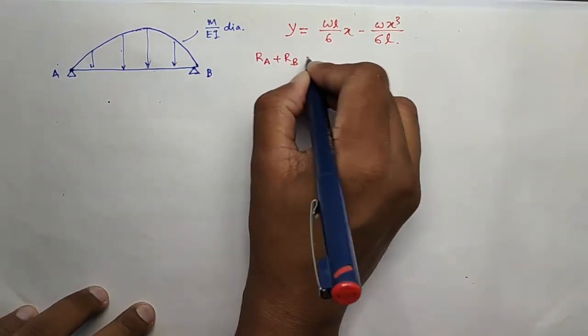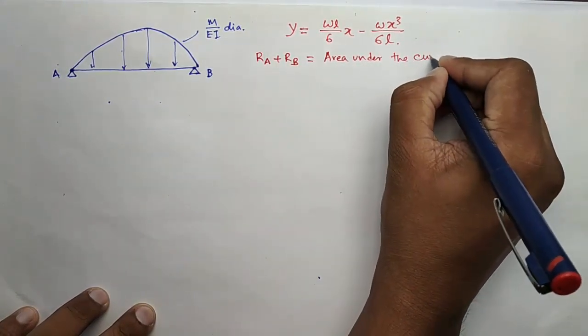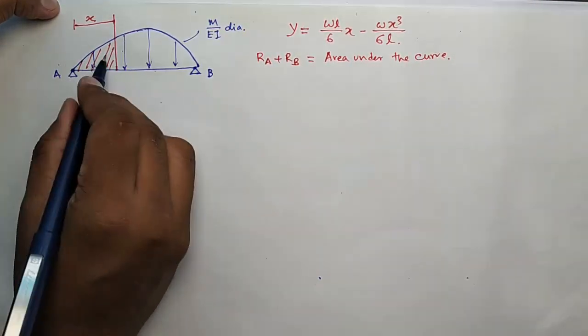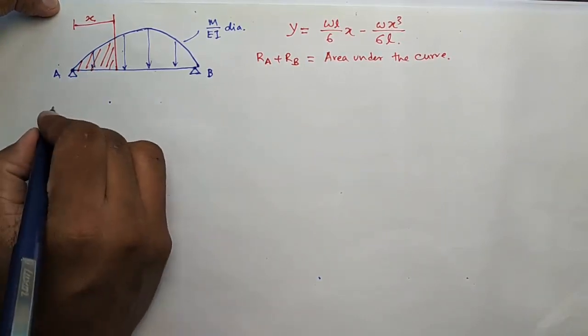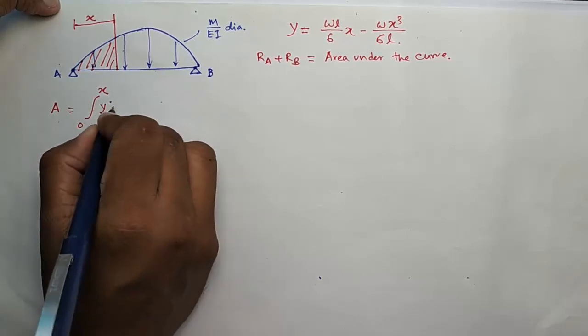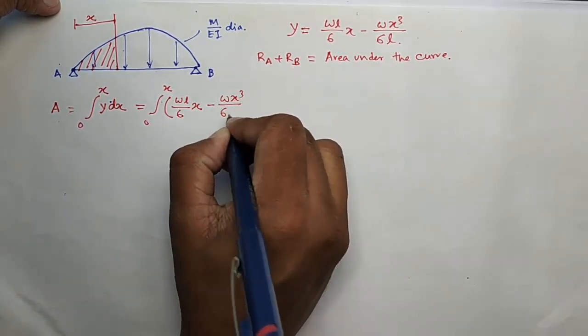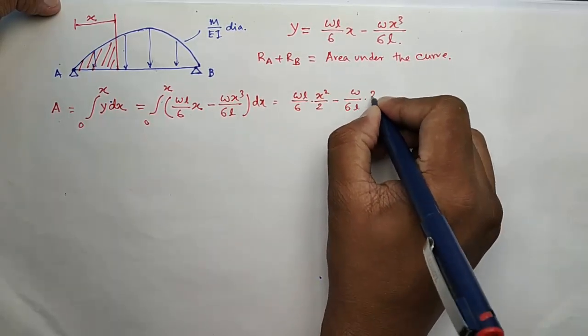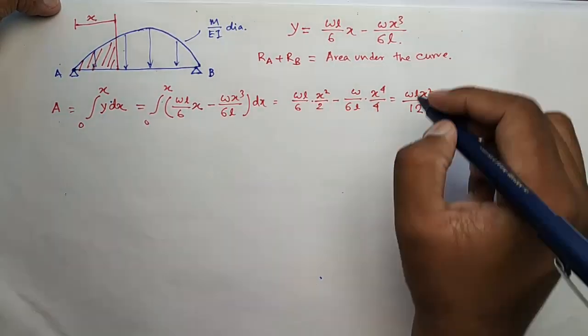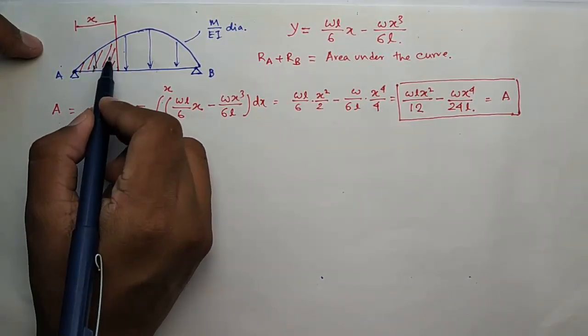Now, this RA plus RB will be this total loading, which is nothing but the area under the curve. So let us first take a section at x distance like this and calculate its area and CG distance. So area will be integration 0 to x, y dx.